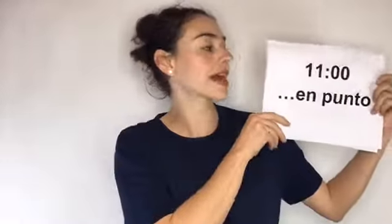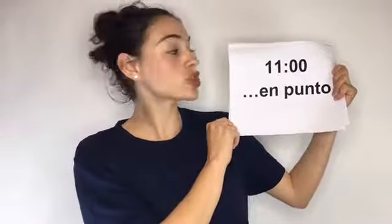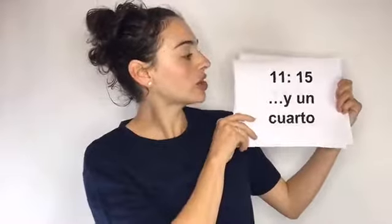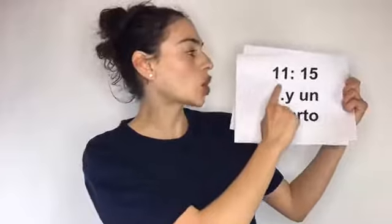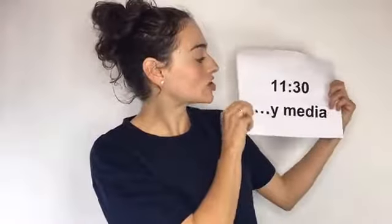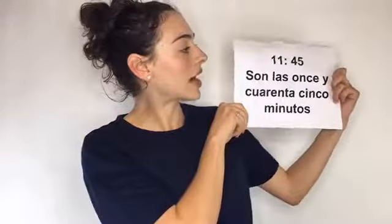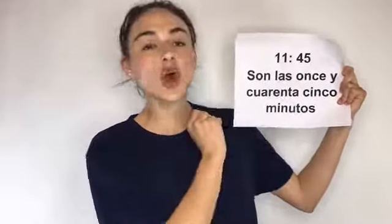Siguiente tenemos, how can you say o'clock? We say en punto. Como aquí, en el ejemplo, son las once en punto. O'clock. Y tenemos son las once y un cuarto — a quarter. Son las once y un cuarto. You can also say son las once y quince minutos. Both are correct. Tenemos la siguiente: son las once y media — half. Son las once y media de la tarde, de la mañana. And we have a more complete example: son las once y cuarenta y cinco minutos.